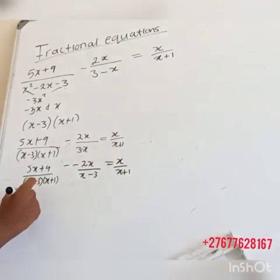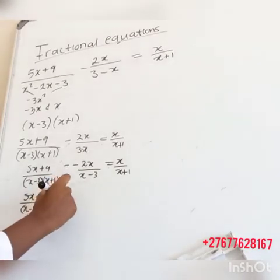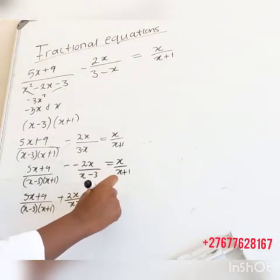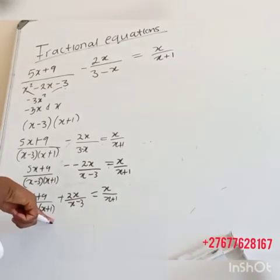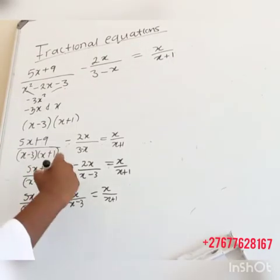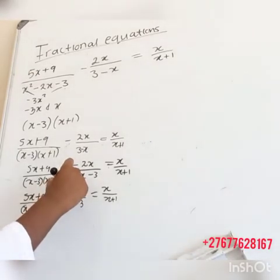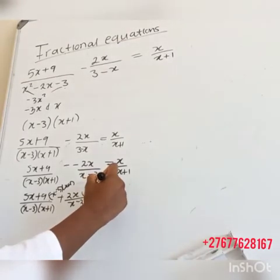So this becomes 5x plus 9 over (x minus 3)(x plus 1), plus 2x over x minus 3, equals x over x plus 1. From this stage, let's multiply everything by the common denominator, which is (x minus 3)(x plus 1).